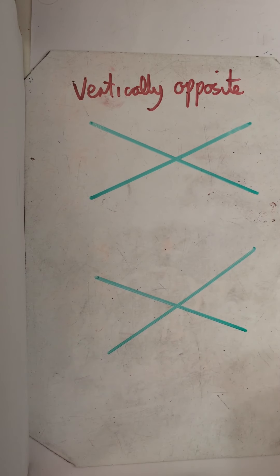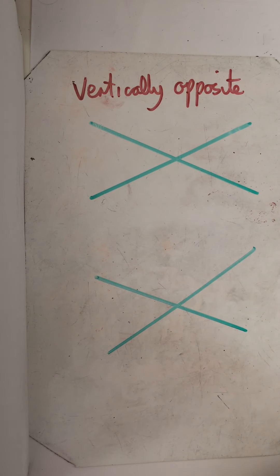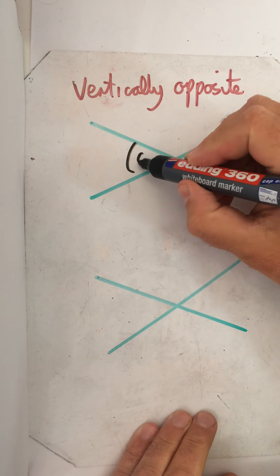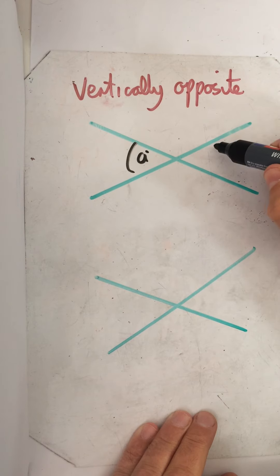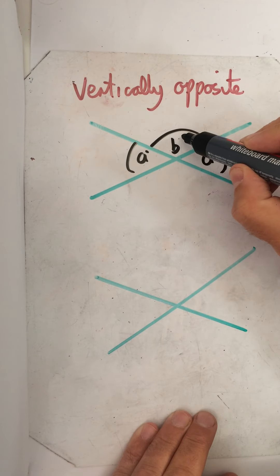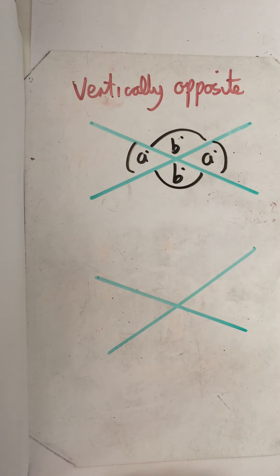So the first topic is vertically opposite angles. These are really straightforward. This means if this is angle A degrees, then the opposite angle is also A degrees, and if that's B degrees then the opposite angle is the same. Simple as that.